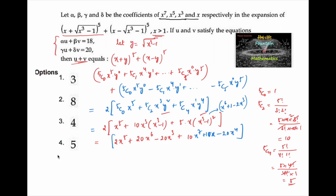Comparing coefficients: the coefficient of x⁷ is α = 10, the coefficient of x⁵ is β = 2, the coefficient of x³ is γ = -20, and the coefficient of x is δ = 10.